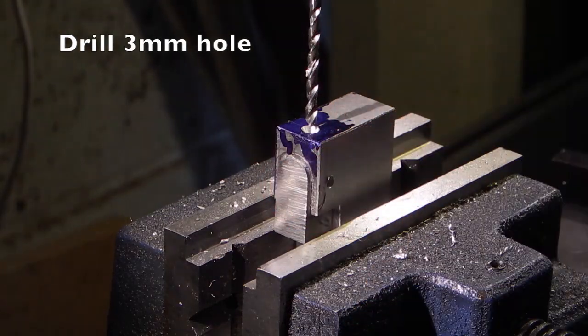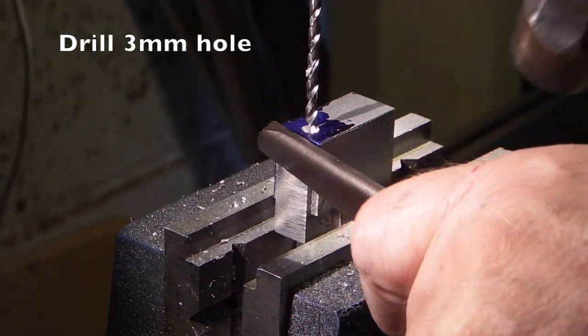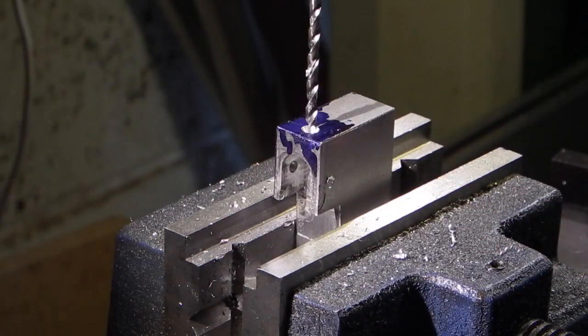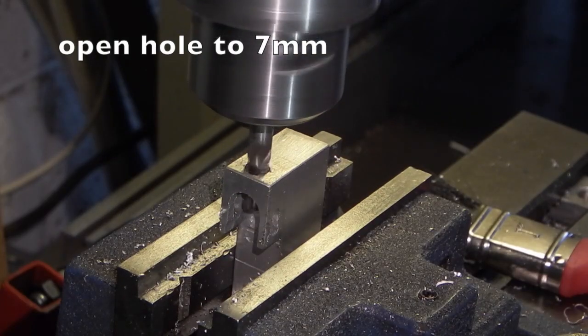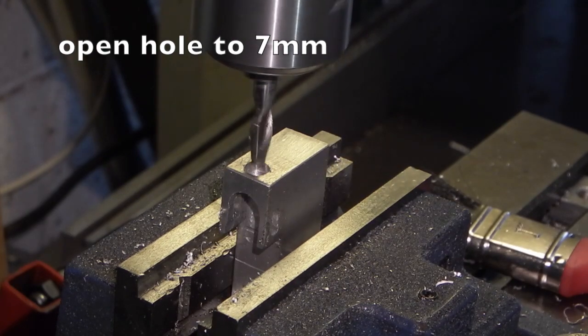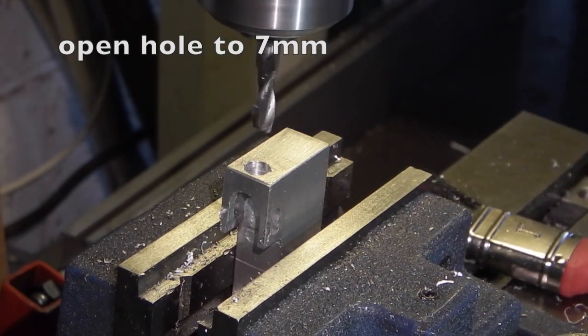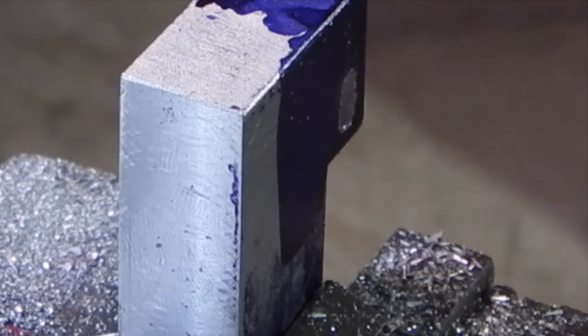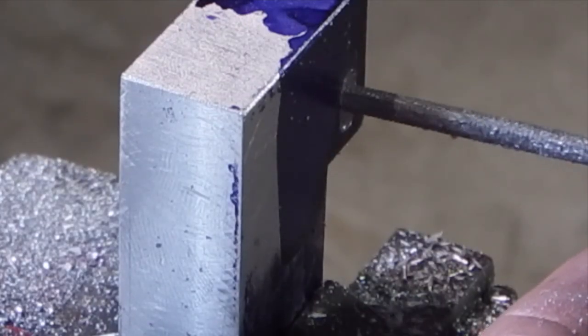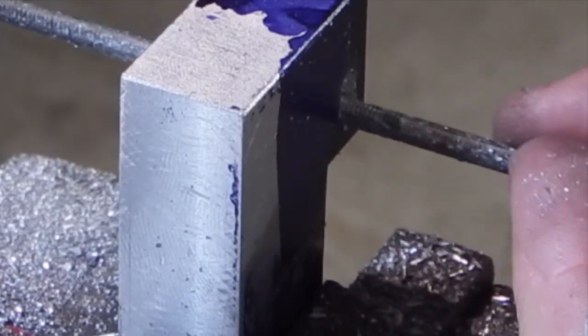I don't want this hole to go into this block. I'll tap that out so that it will go straight through. With a small round file I've just joined the two holes together.